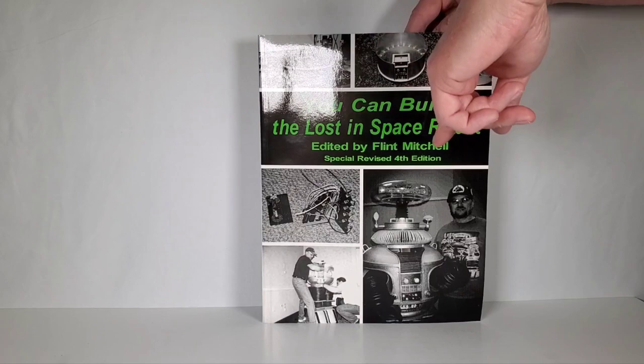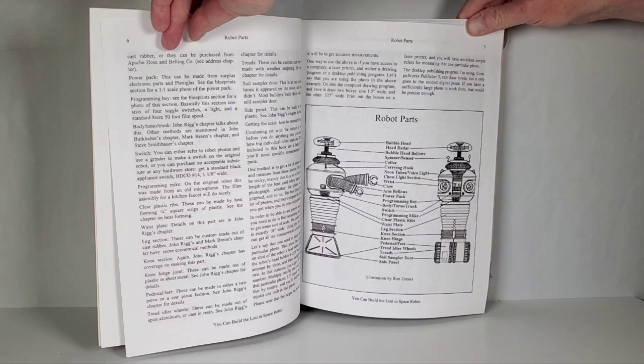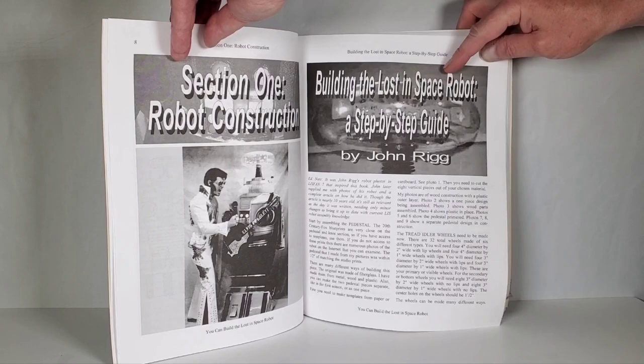And this was in the very early days of the Lost in Space robot building because a lot of people were just kind of starting to build their own. Now there's an article in here that talks about, this one has a little bit extra stuff in it compared to the original. But here's the one article with John Rigg. It says, Building the Lost in Space Robot, a step-by-step guide. So he was one of the first ones to ever build a Lost in Space robot.